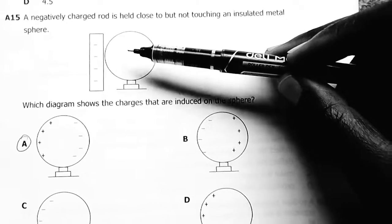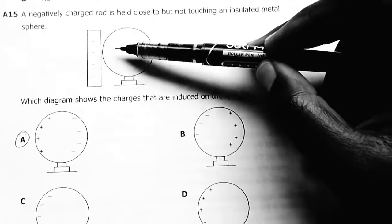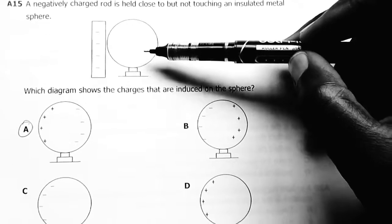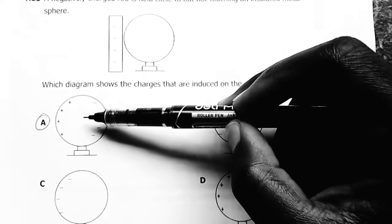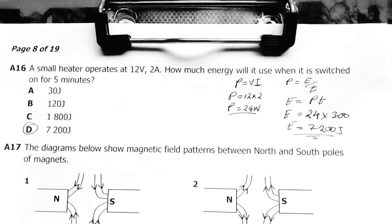The rod is negative, the material for now is neutral. This negative will attract positivity. In other words, it will repel the electrons such that this side will be positive, the other side will be negative. So this will be our answer, A.